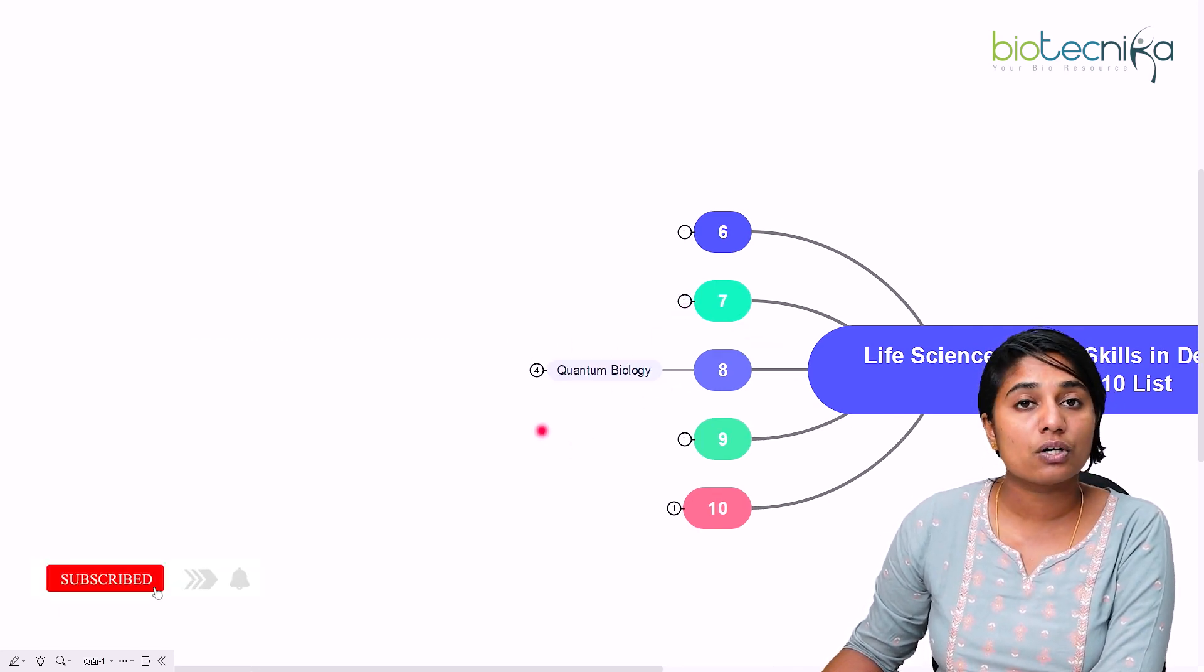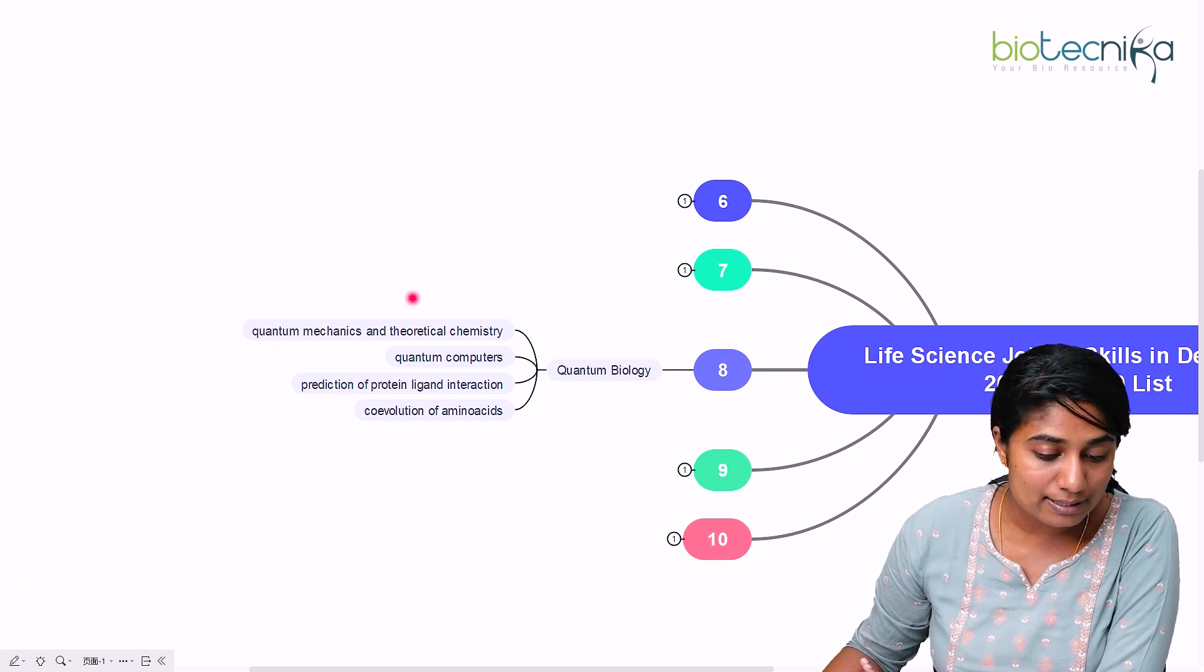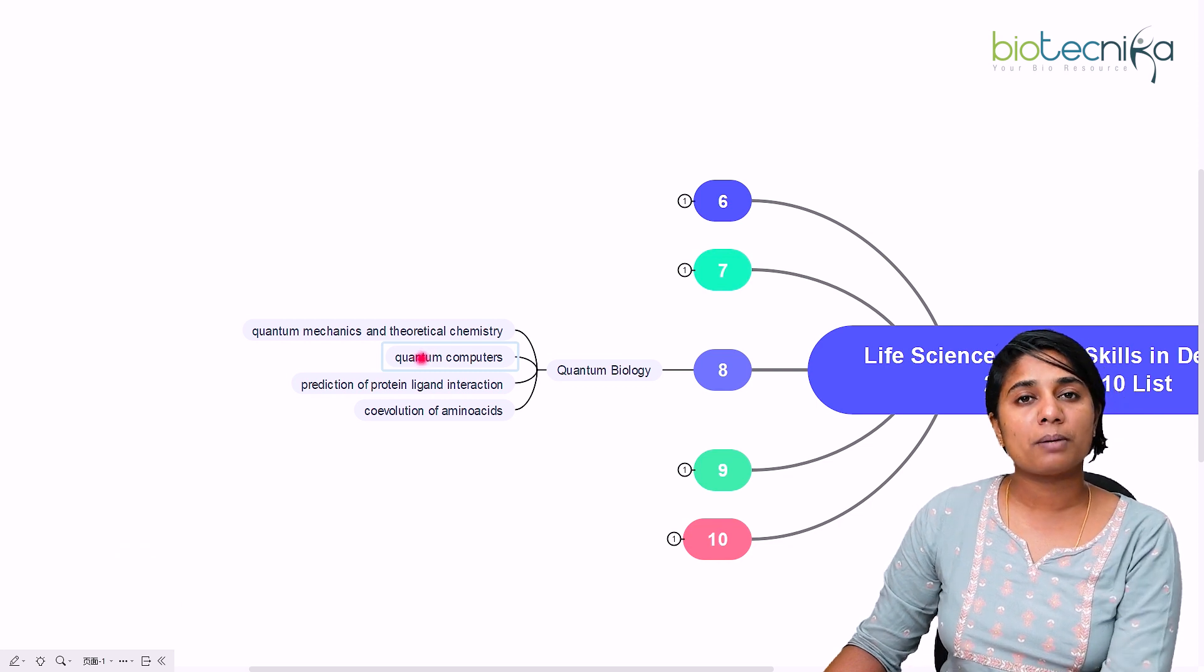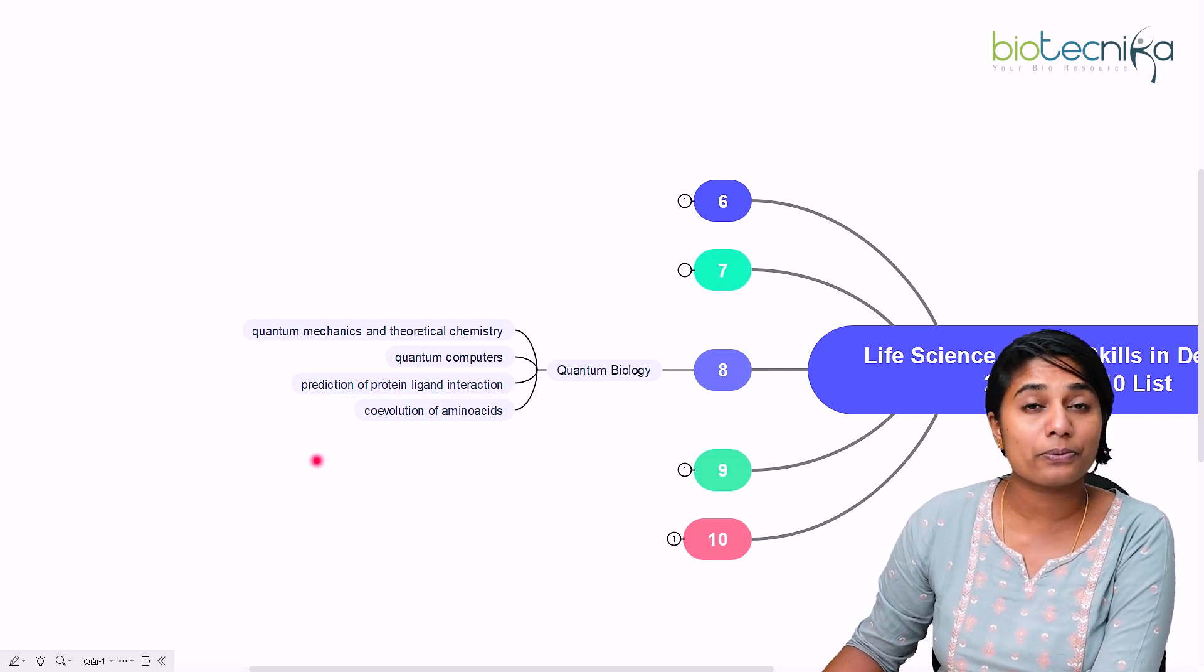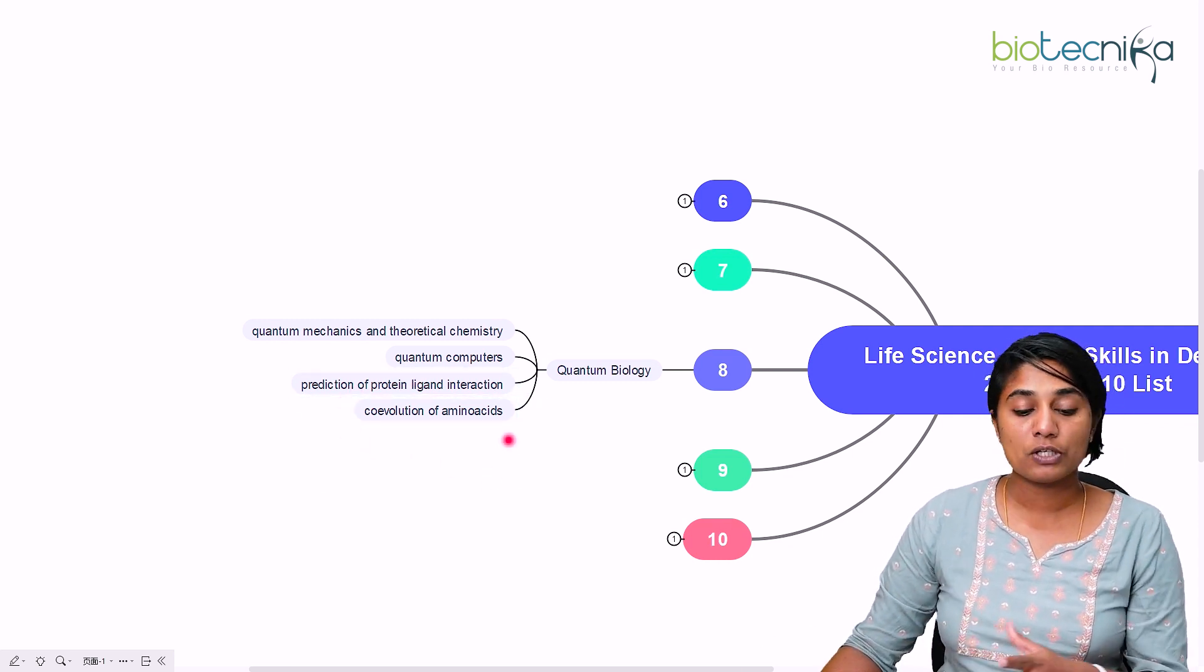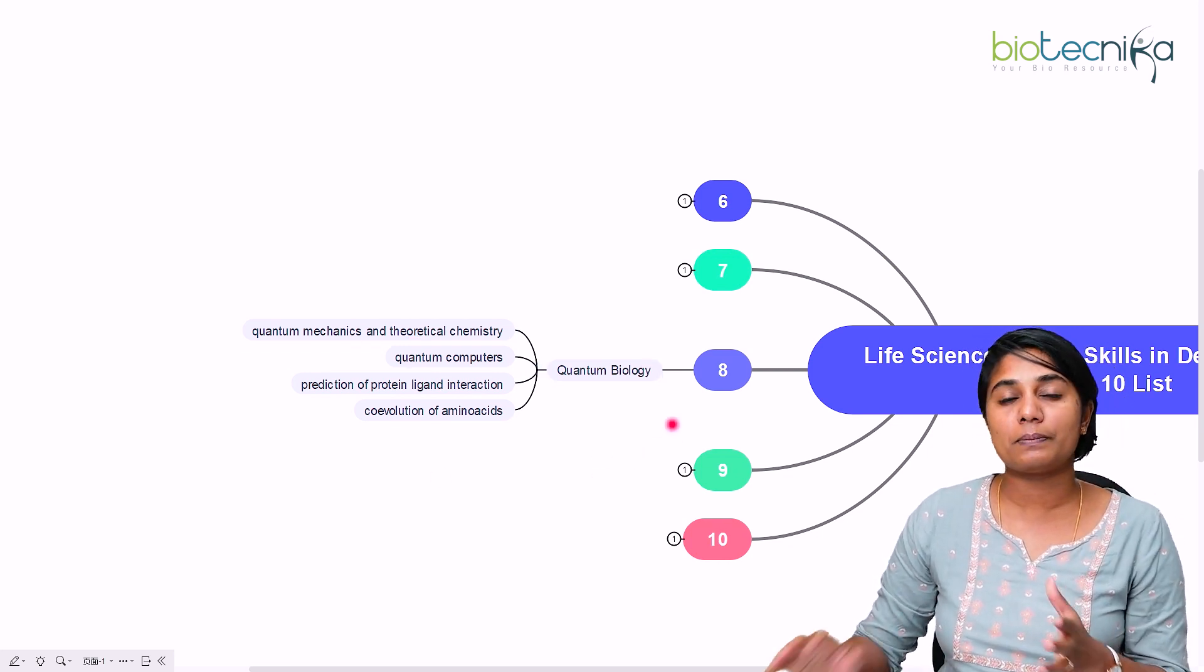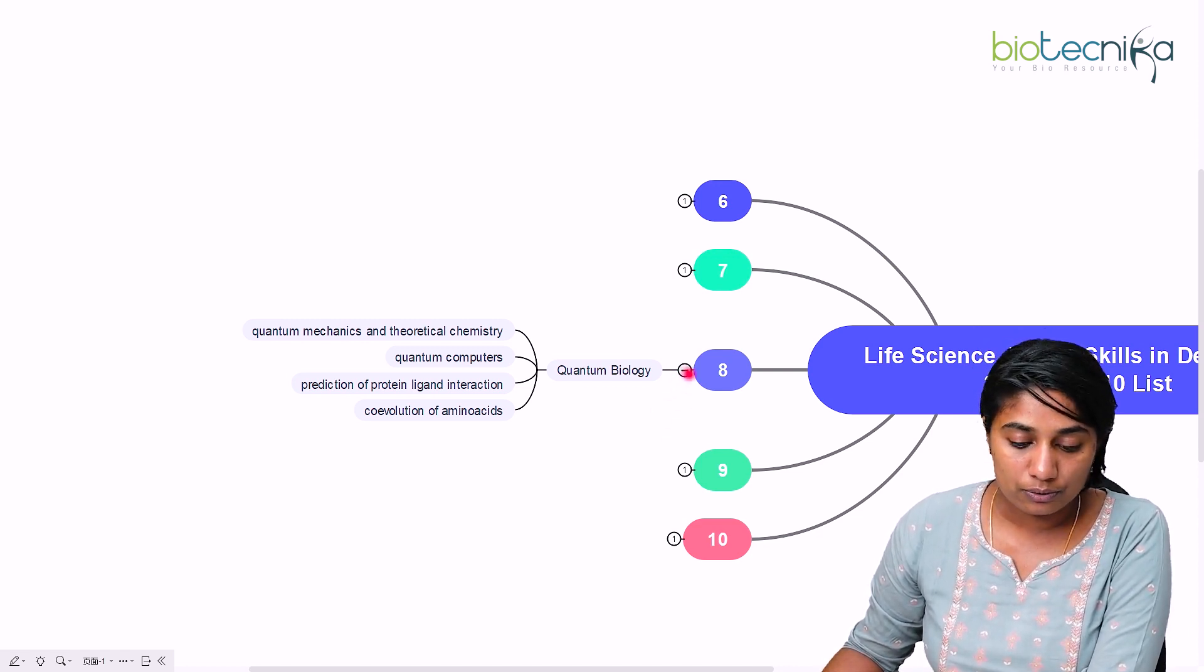The eighth field that I have for all of you is quantum biology. What is quantum biology? Quantum biology is the use of quantum mechanics and theoretical chemistry in the field of biology and medical sciences. Here we use quantum computers which are much more faster and better used than traditional computers and here we can predict multiple things. For example, prediction of protein-ligand interactions, co-evolution of amino acids, etc. These are few applications of use of quantum computers in biology. This is one of the fields that is quite nascent but is booming or upcoming in this era. For the next 10 years, it's going to really boom.